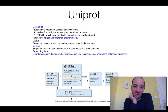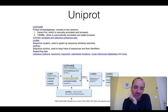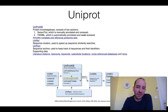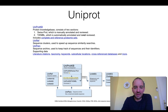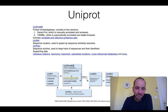UniProt is the main sequence database. It contains two main parts: one is called Swiss-Prot, and the other is called TrEMBL — the translated EMBL database. The main difference is that Swiss-Prot contains manually annotated and reviewed entries, so all the data there — not only the sequence but all other data — should be of high quality. It's not always correct, but it is much more likely to be correct because it has been manually annotated.